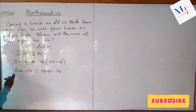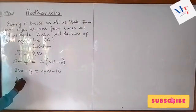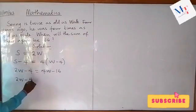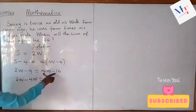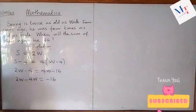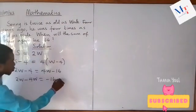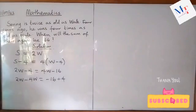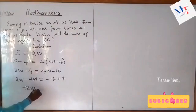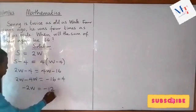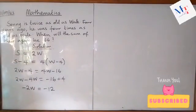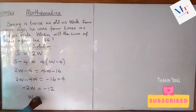Opening the bracket gives four W minus sixteen. Collecting like terms — bring plus four to this side: two W minus four W equals negative sixteen plus four. So we have two W minus four W, which is negative two W, equals negative sixteen plus four, which is negative twelve. Wait — negative sixteen plus four gives negative twelve.